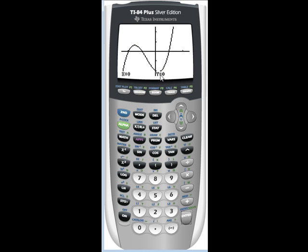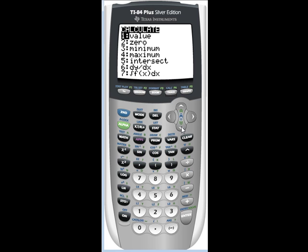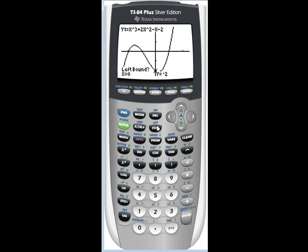So let's find our local max and our local min. To do that, we're going to do second calc. And I'm going to look for my local max first. So I'm going to go down to 4 and hit enter. Now I need to bring my cursor way over to the left side of where the maximum point is. This will take a minute here. And anywhere to the left is great. So I hit enter.